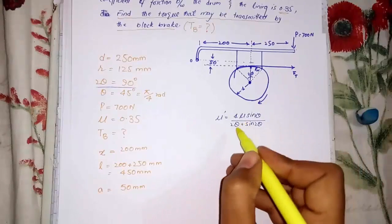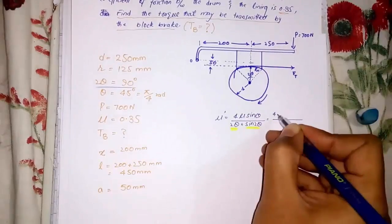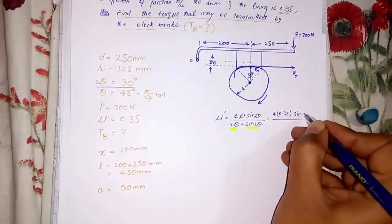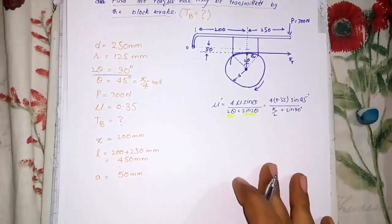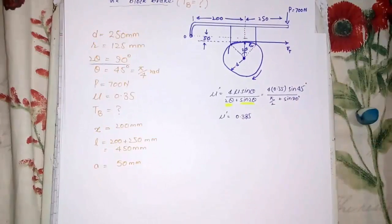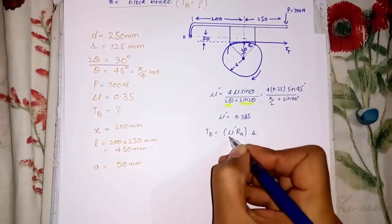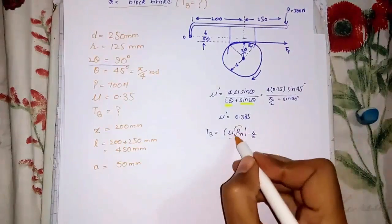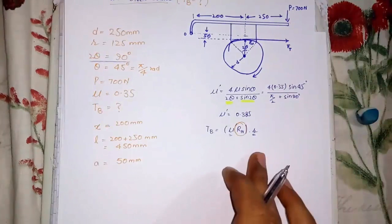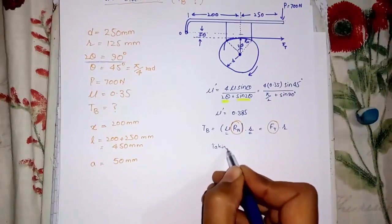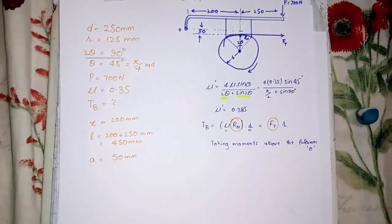Let's find out mu prime — note that theta in the trigonometric function is in degrees, and outside the trigonometric function is in radians. Now find out TB, but we don't have the value of Rn. So to find Rn, take the moment about point O.